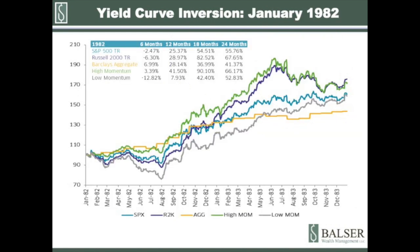In January of 1982, after a shallow correction over the first six months, stocks spent the next 18 months tacking on tremendous gains. Bonds also performed very well during this time — everything was strong across the board. High momentum stocks did very well, but pulled back along with small caps during the final six months. The laggards closed a huge performance gap at the end of the period, but were generally to be avoided.